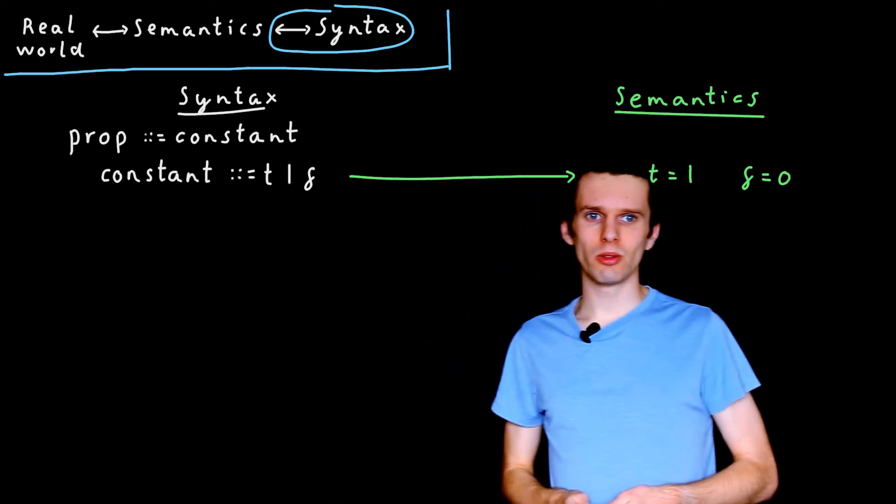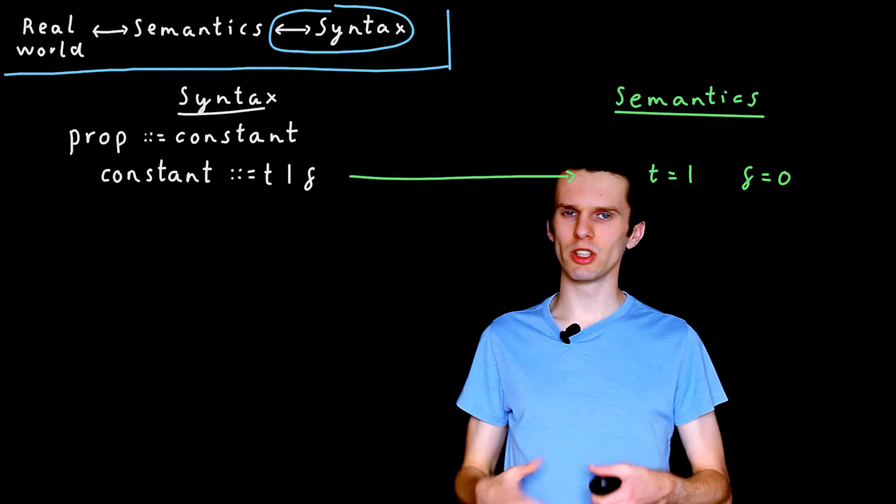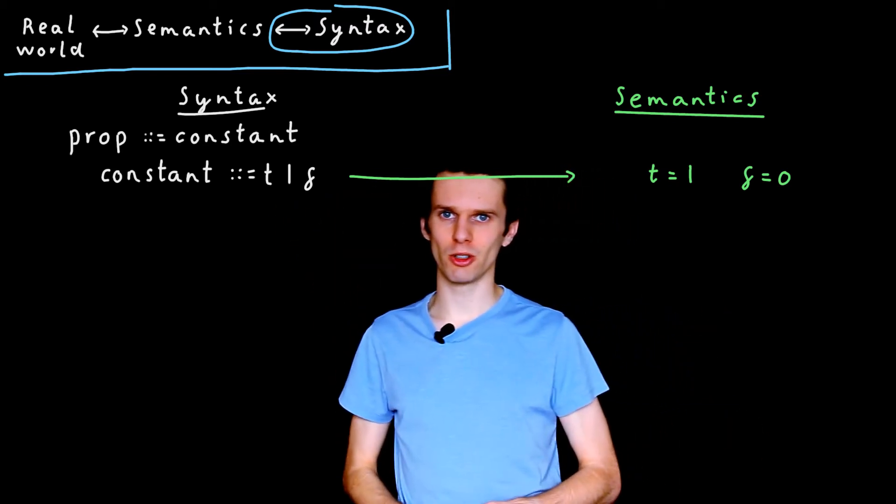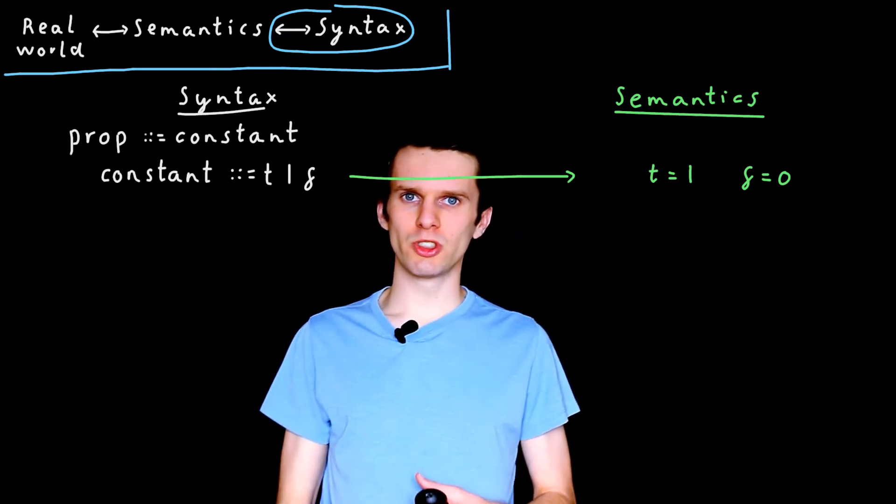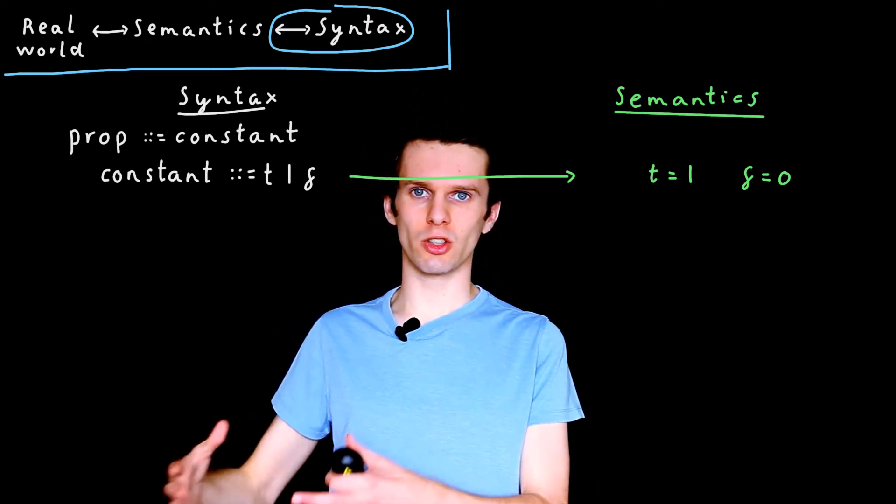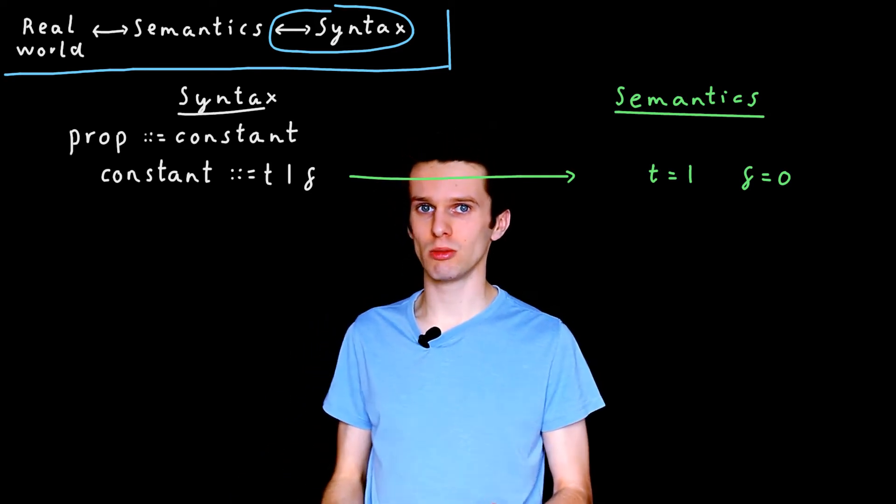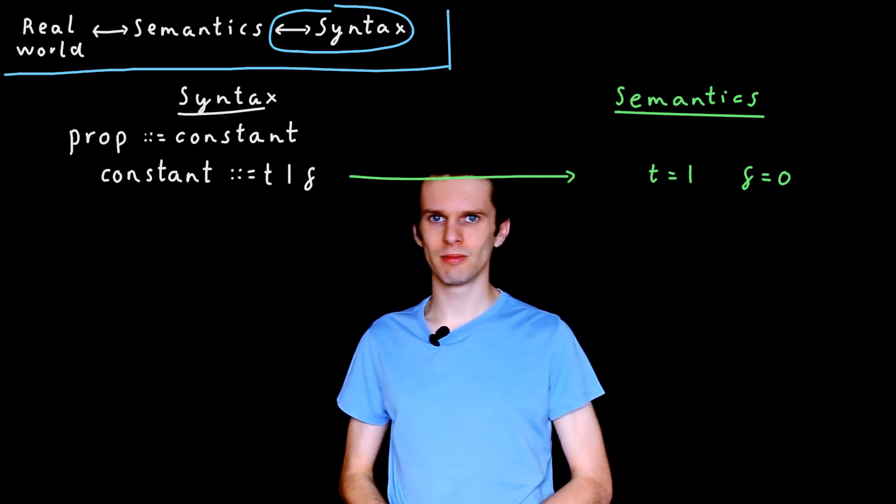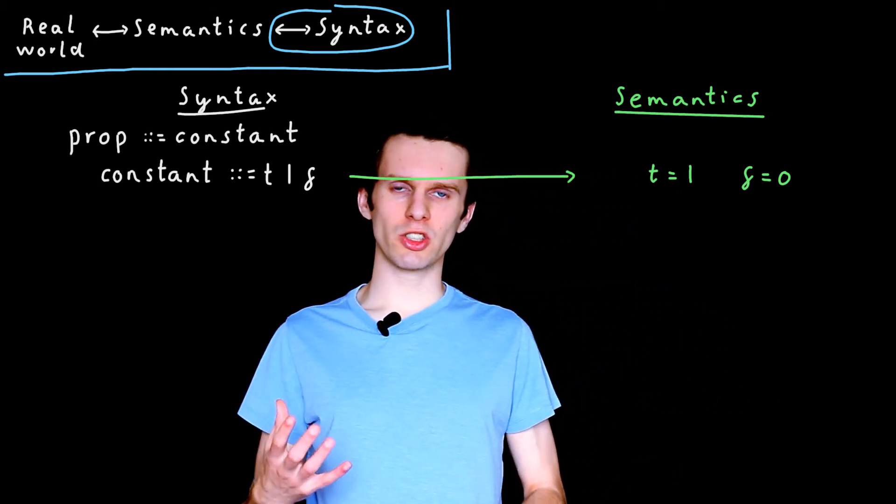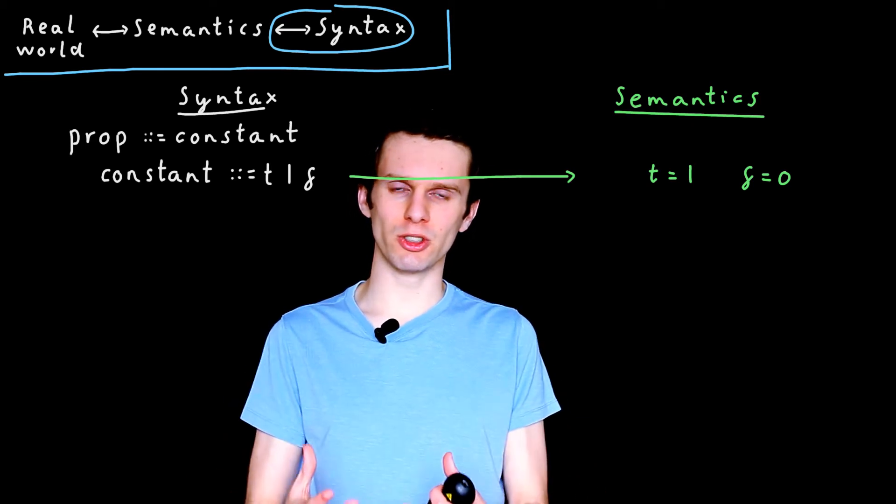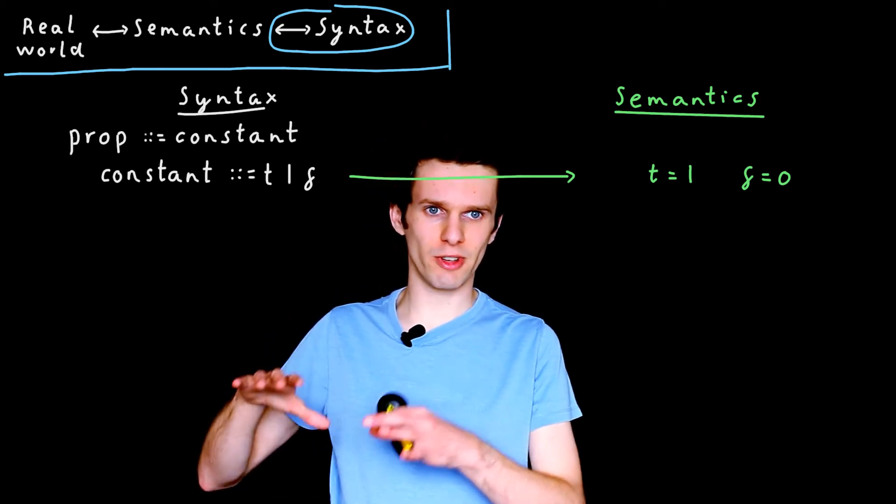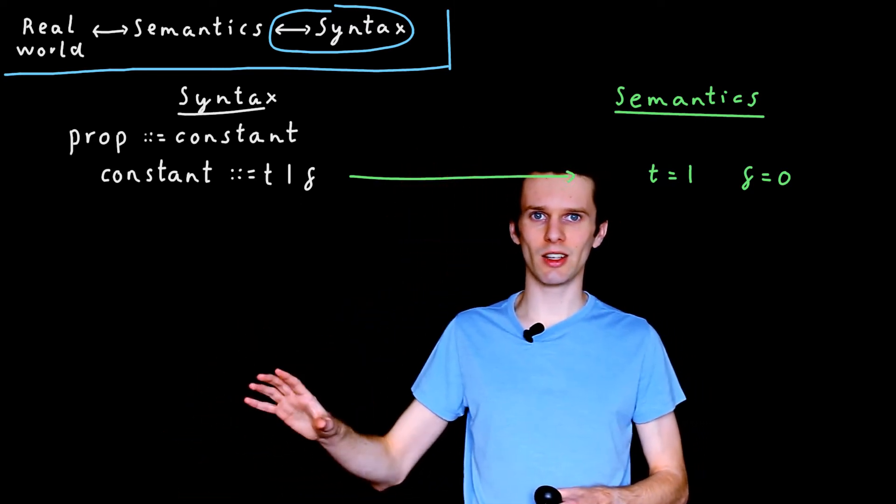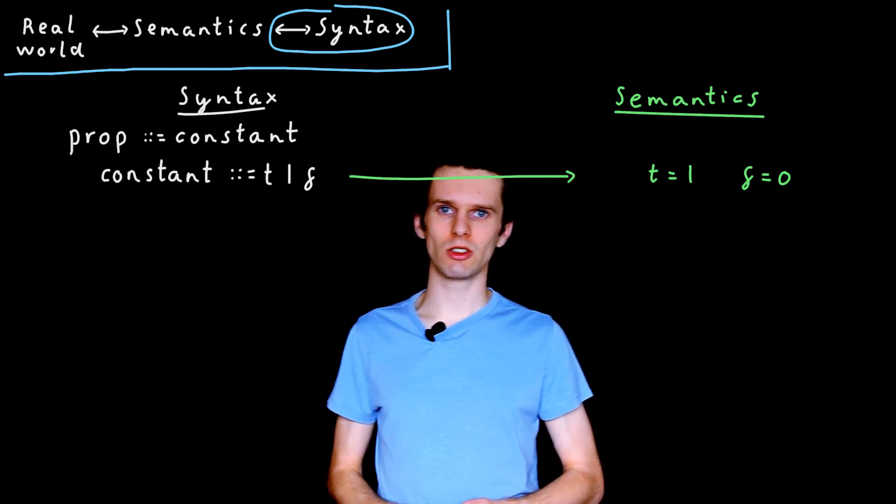So far, what we can write down in the syntax about the real world isn't that interesting. We can write down a T representing true and an F representing false. But we want to be able to reason about sentences like the ones we saw in the last video. Things like 'it is raining' or 'two is bigger than five'. The thing is, we want to abstract away from the difficulties of those sentences. Those sentences are defined in purely natural language, and we'd rather leave it to the linguists to analyze that aspect of those sentences.